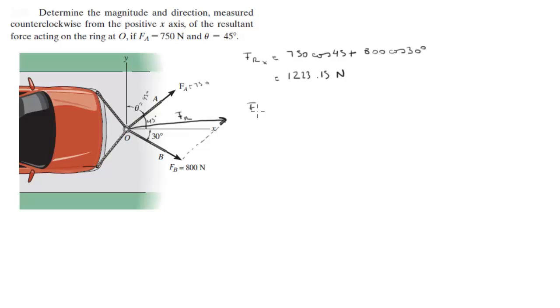So F_r_y, the y component of the resultant force, should be slightly positive by my estimation. 750 sine of 45, although sine of 45 and cosine of 45 are the exact same thing, minus—because F_b is going in the negative y direction—800 sine of 30 degrees. When you place the numbers in your calculator, you're going to get 130.33.